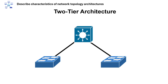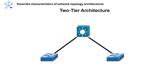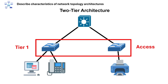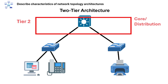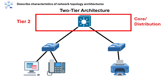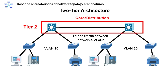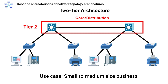The two-tier network architecture includes an access layer where end devices like PCs, printers, and IP phones connect. The core layer, which also acts as a distribution layer, connects access switches together and routes traffic between VLANs or networks. A use case example would be small to medium-sized businesses that don't need separate distribution layers.